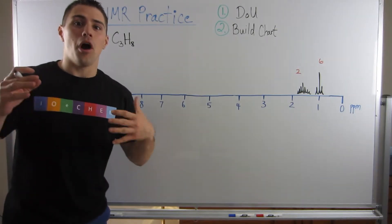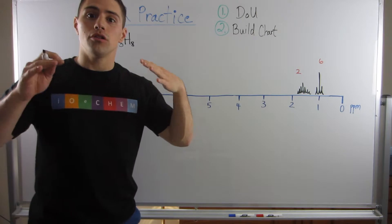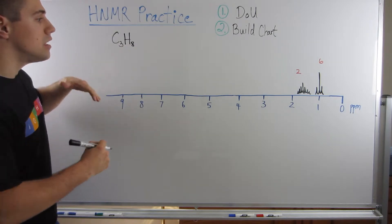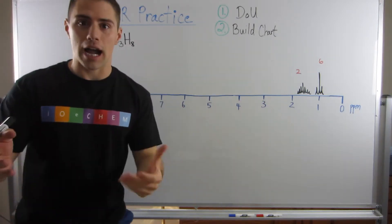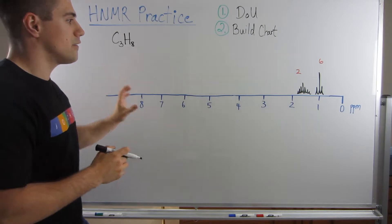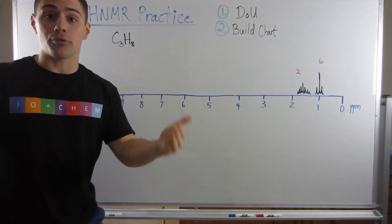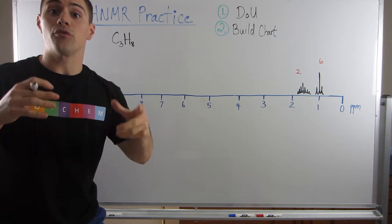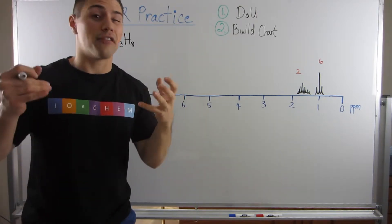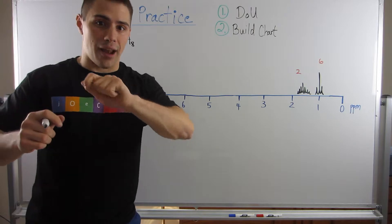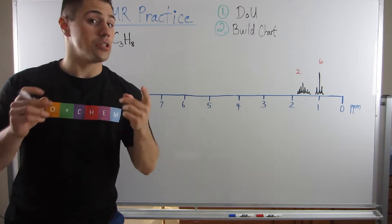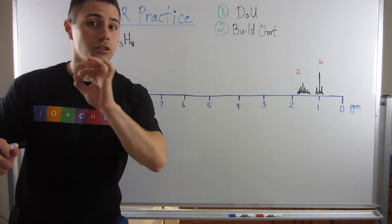Welcome back. In this video we're going to do two NMR problems where we receive the molecular formula as well as an NMR spectrum for protons, and we are supposed to deduce the structure. We'll go through a process of dissecting the spectrum, gaining information, organizing it, and then deducing a bond-line structure. If you can do that, you are an NMR wizard.